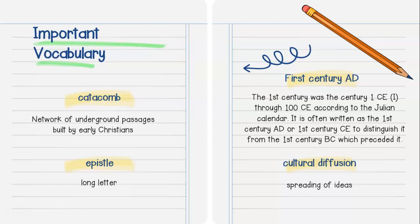According to the Julian calendar, it's often written as the first century A.D. or the first century C.E. to distinguish it from the first century B.C. which preceded it. Remember, B.C. or B.C.E. is before Christ or before common era — those are the same thing. And C.E. and A.D. are the same thing: C.E. is common era and A.D. is anno domini. Cultural diffusion is the spreading of ideas. If you need any touch-up on C.E., A.D., B.C., B.C.E., look back to the very first pages in your Human Odyssey reading book.